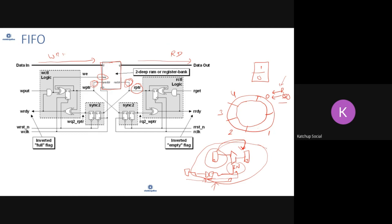In a FIFO, you are writing data to the RAM but you can't keep writing indefinitely — you have to detect that the FIFO is not full. Full means all places have been filled completely. You also don't want to read from an empty FIFO where nothing has been written. So there are two important conditions to identify: FIFO full and FIFO empty.